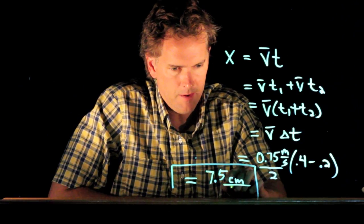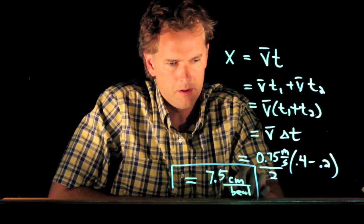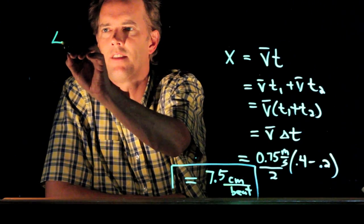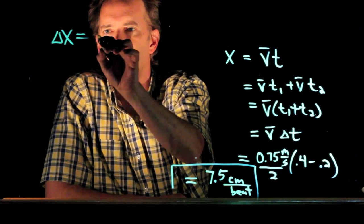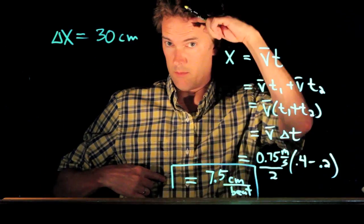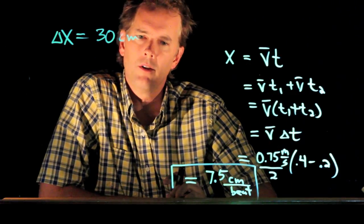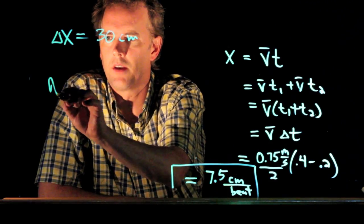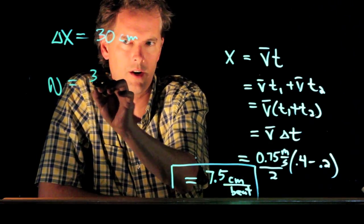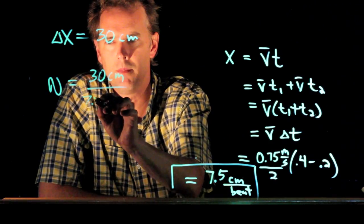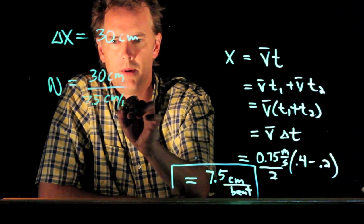Well, it's 7.5 centimeters per beat. And if we know the distance from your heart to your brain, which is about here, right, it's 30 centimeters or so. Then we can calculate how many beats it takes because the number of beats is just 30 centimeters divided by how far it moves per beat.